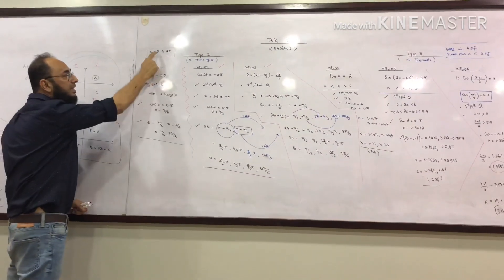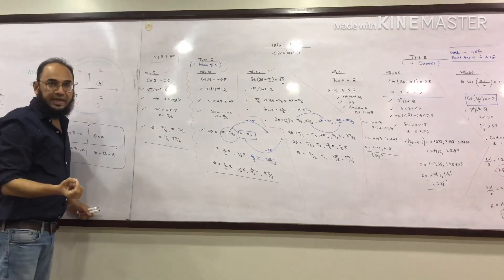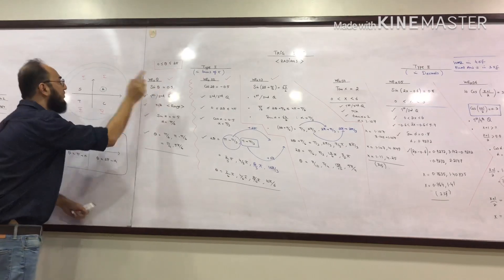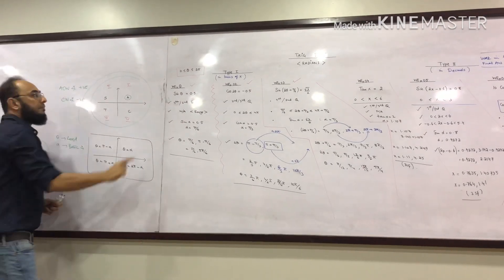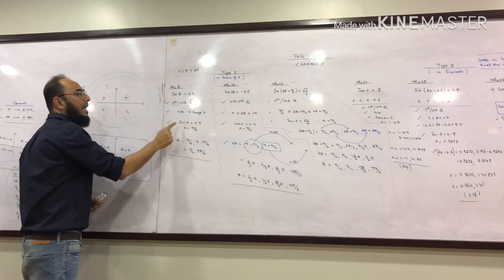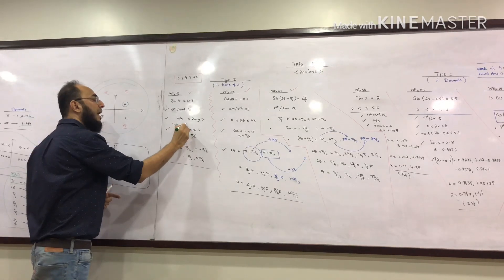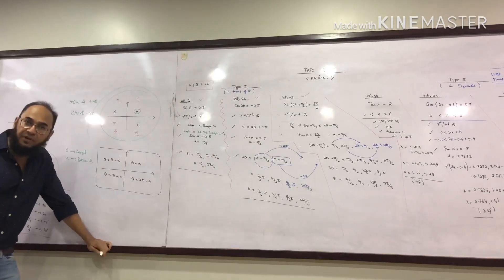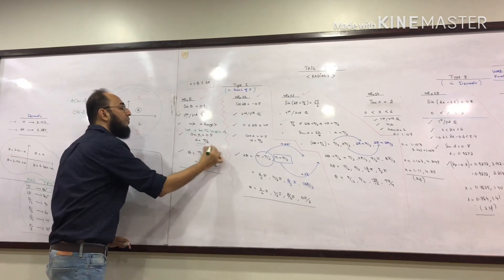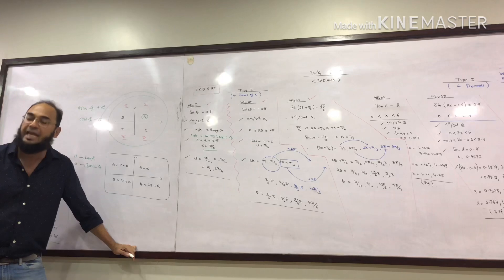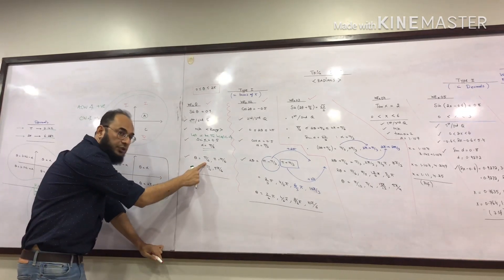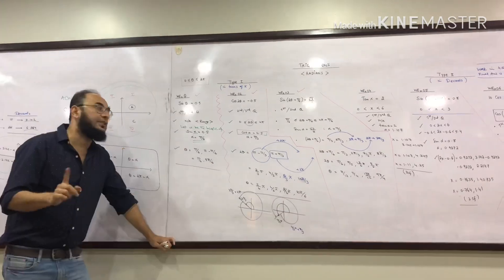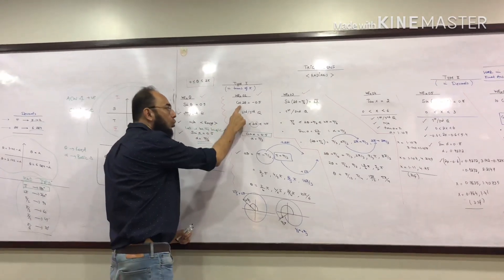Example 1: sin θ = 0.5, where θ lies between 0 and 2pi. Since sine is positive, it's in the first and second quadrants. Let alpha be the basic angle. Sin alpha = 0.5, so alpha = 30 degrees, which is pi by 6. First quadrant: theta = pi by 6. Second quadrant: theta = pi minus pi by 6, which simplifies to 5pi by 6.